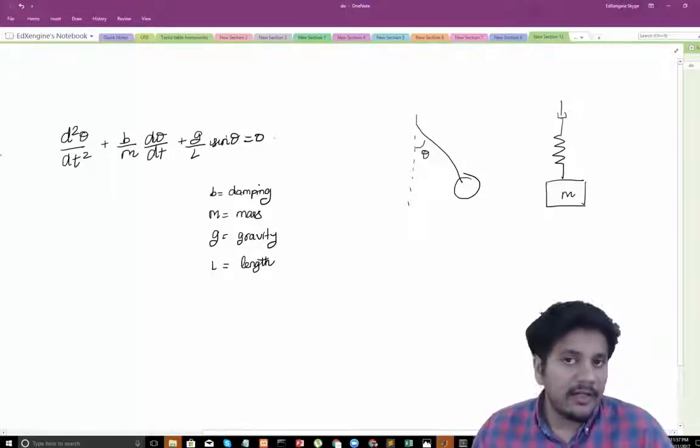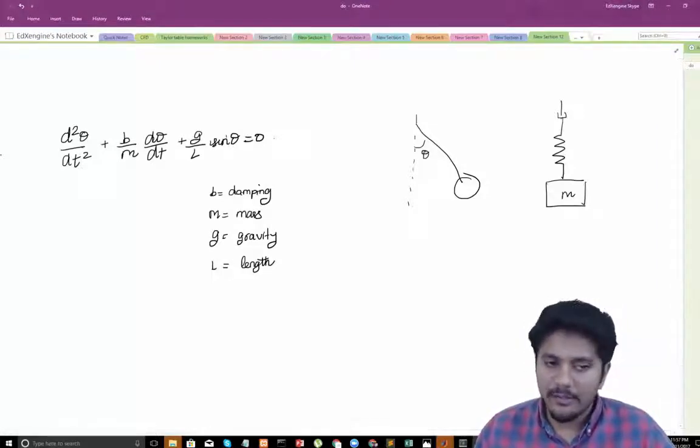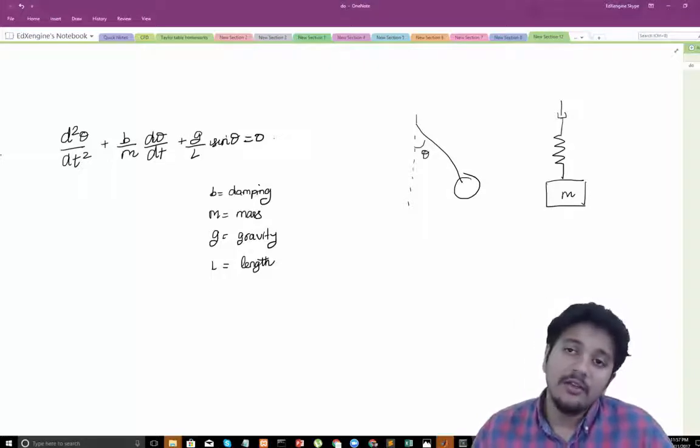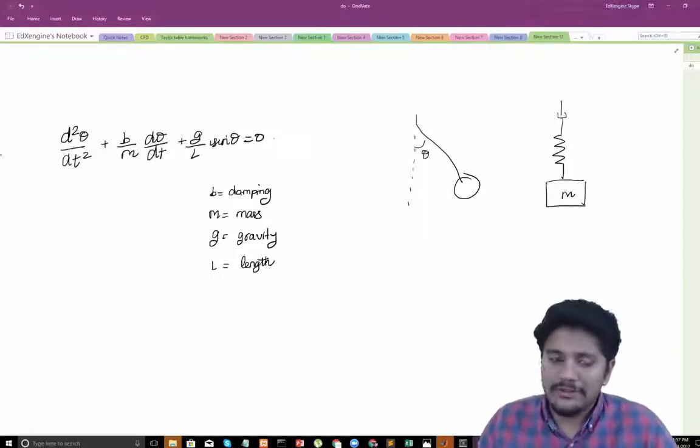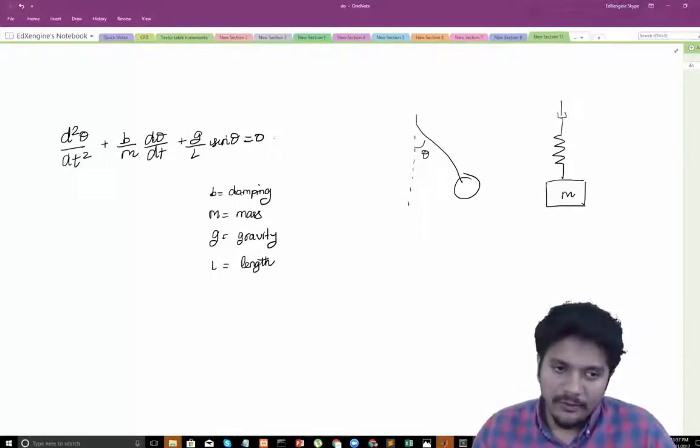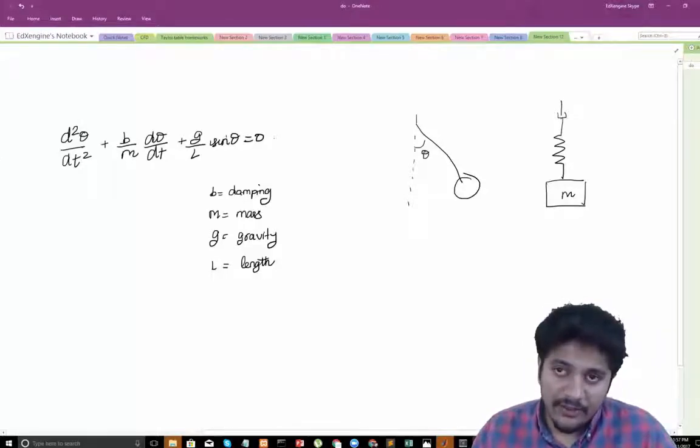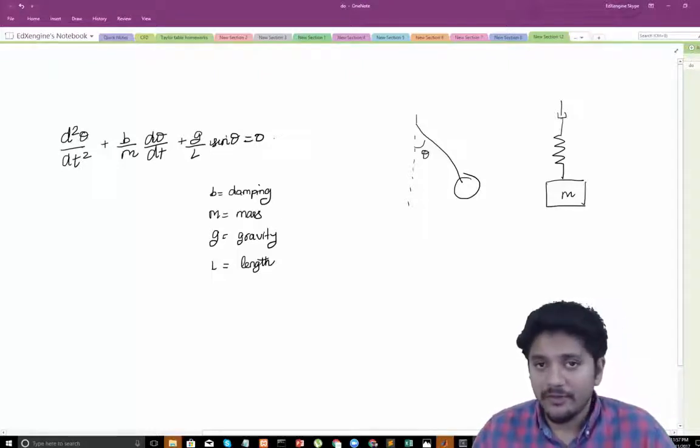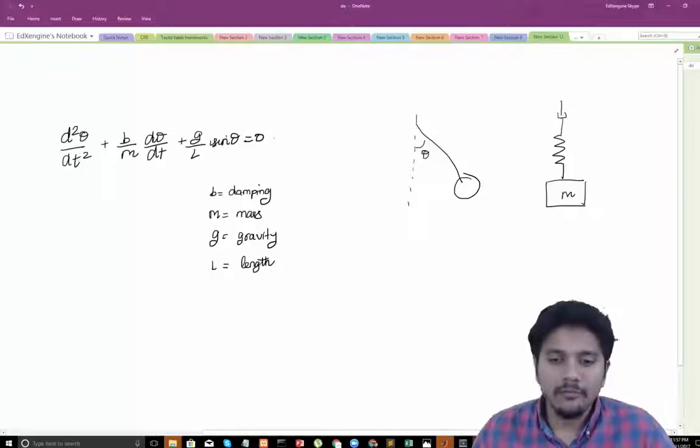So the fundamental idea behind solving ODEs both analytically and computationally is when you have a higher-order ODE then you break it down into a set of first-order ODEs. The first thing that you will notice here is this is actually a second-order ODE, right? The reason why it's second-order is because you have this exponent 2 here. If it's a first-order ODE then you will just have d theta by dt.